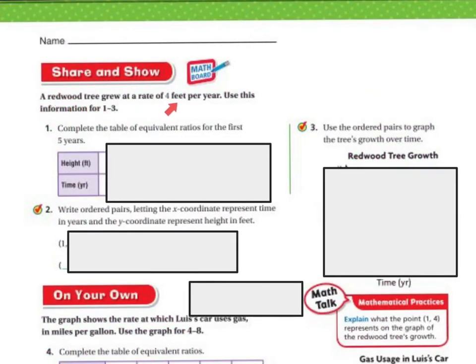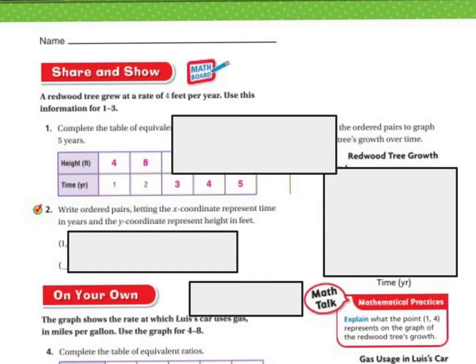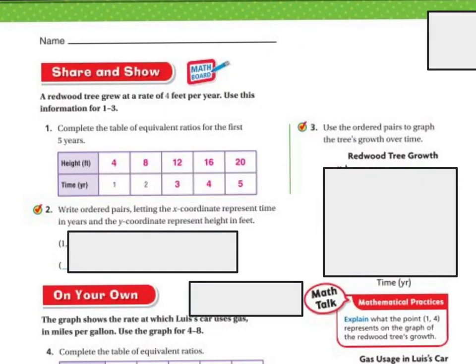A redwood tree grows at a rate of 4 feet per year. Use this information for problems 1 through 3. For every 1 year it grows 4 feet, so: year 1 = 4 feet, year 2 = 8 feet, year 3 = 12 feet, year 4 = 16 feet, year 5 = 20 feet — adding 4 each time.